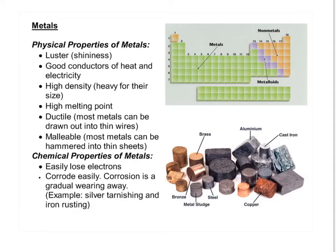You can divide up the periodic table into three main groups: metals, nonmetals, and metalloids. Physical properties of metals — they're shiny, good conductors of heat and electricity. They lose electrons easily, which is a chemical property. As you can see, most of the periodic table is made up of metals.